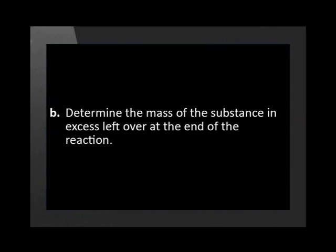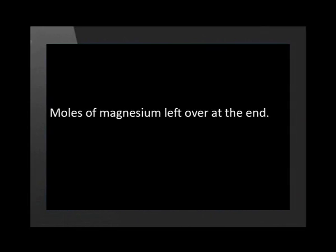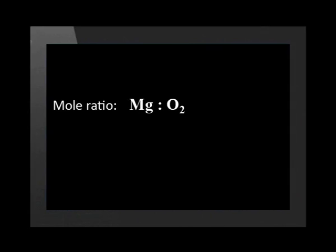Part B of the question says: determine the mass of the substance in excess left over at the end of the reaction. We will start by determining the number of moles of the substance in excess left over. Before we do this, we must determine how many moles of magnesium were used up in the reaction. Oxygen is the limiting reagent and is used up entirely. We had 0.3 moles of oxygen at the start. The mole ratio of magnesium to oxygen is 2 to 1, so if all 0.3 moles of oxygen is used up, then 0.6 moles of magnesium will be required and used up in the reaction.